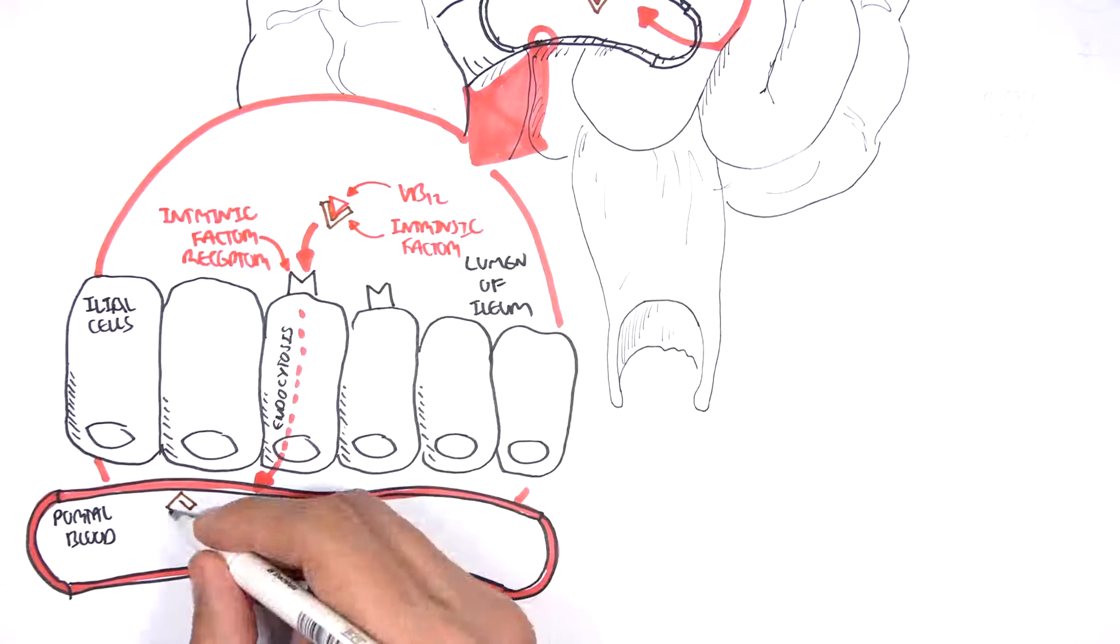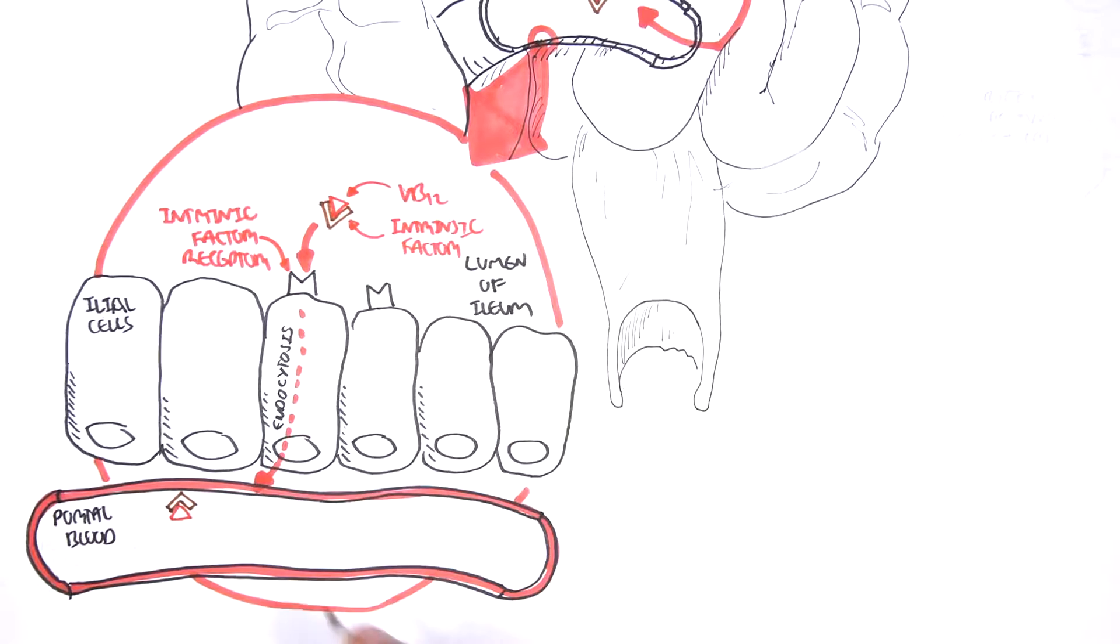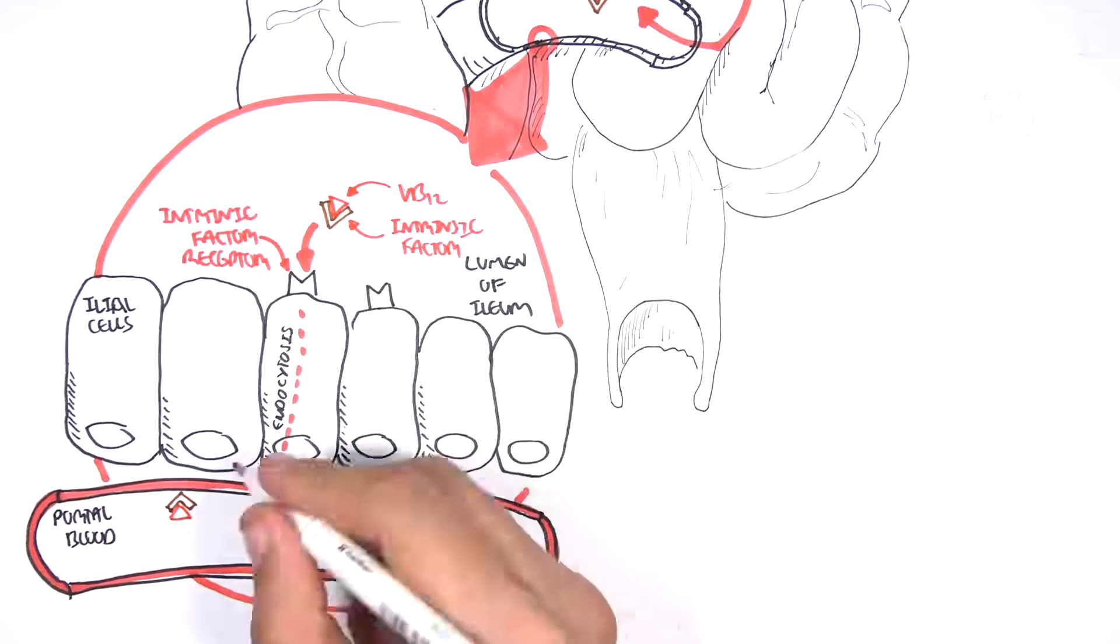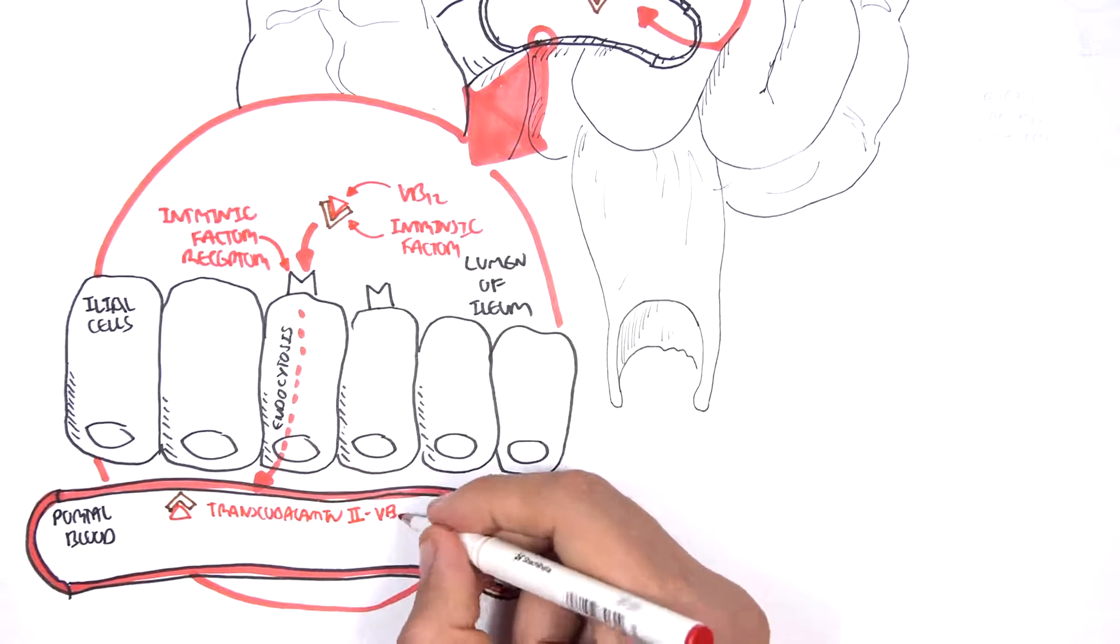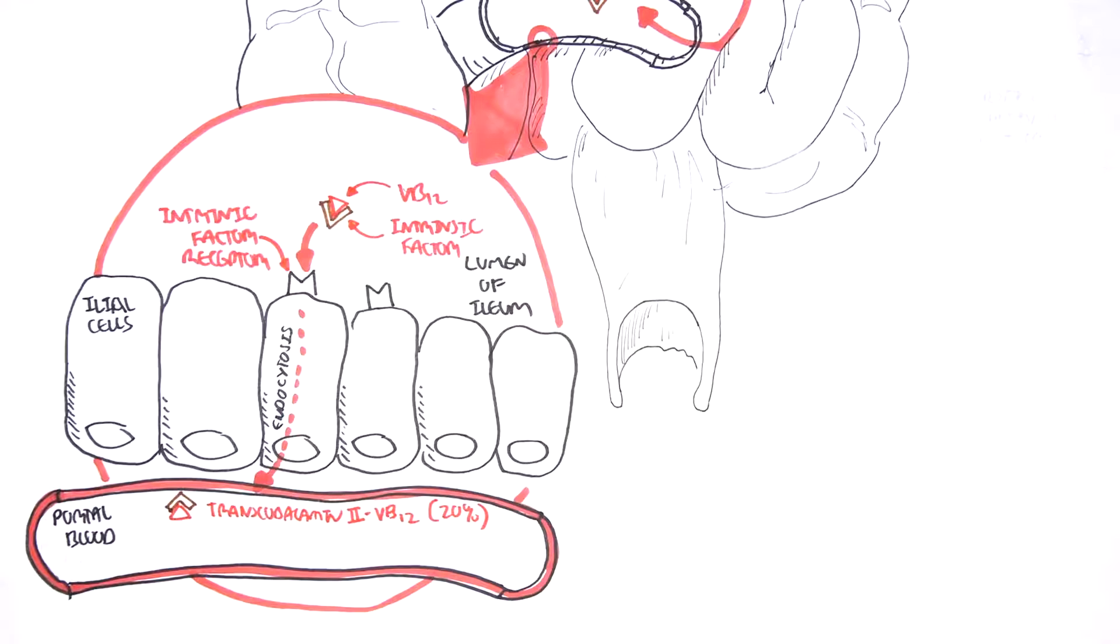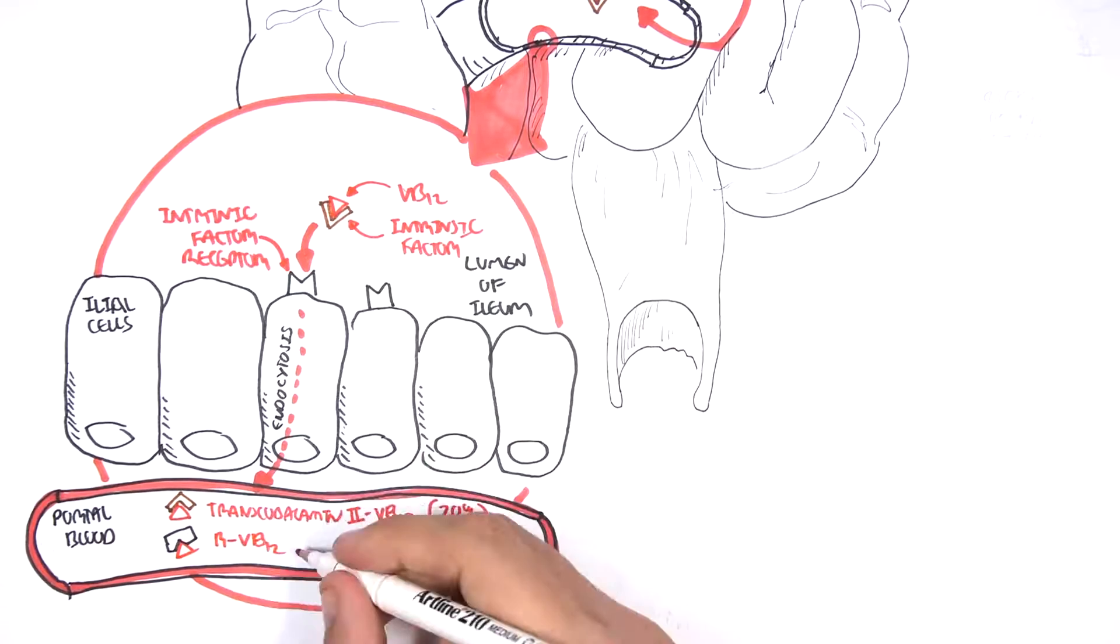And in the plasma, the vitamin B12 will bind onto plasma proteins called transcobalamin 2. 20% of vitamin B12 binds to transcobalamin 2 in the plasma. However, interestingly, the majority of vitamin B12 is bound to transcobalamin 1. Remember, also known as the R binder.